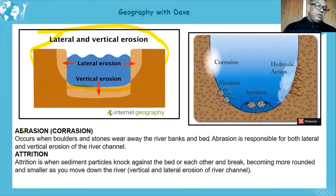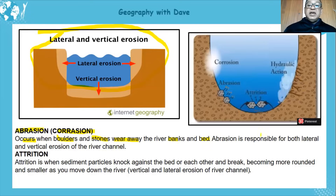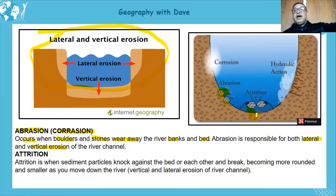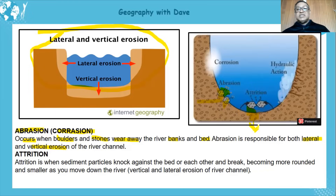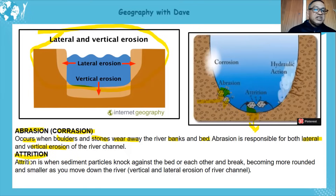We also have abrasion, also known as corrasion. This occurs when boulders and stones wear away the river banks and bed, and it is responsible for both lateral and vertical erosion. You can see the stones knocking against the sides and the bottom — through saltation it knocks against the bottom — widening and deepening the valley.